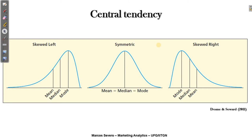It is important to understand the relationship between the mean and the median, because how they are organized inside the dataset is going to delineate the distribution you have. The most well-known relationship is when they are equal — usually when they are equal, you have a symmetric distribution, like the normal distribution.